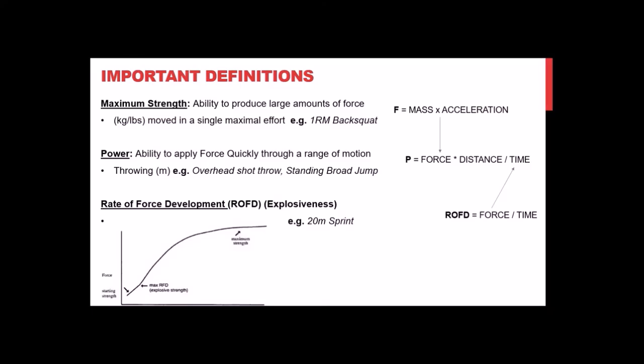At the other end of the spectrum, you have explosiveness — rate of force development — which is how fast you can develop force. A 20-meter sprint is an example: athletes are only on the ground for a short period of time, so they have to apply force relatively quickly and can't apply maximal force because they're only in contact for about two-tenths of a second.